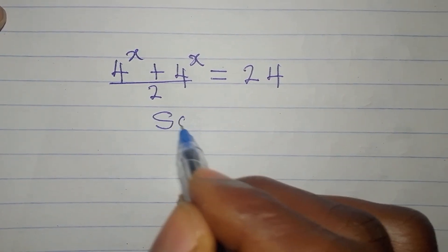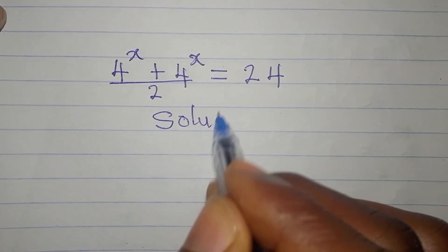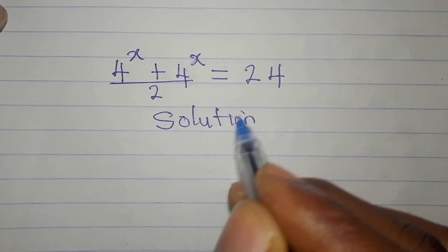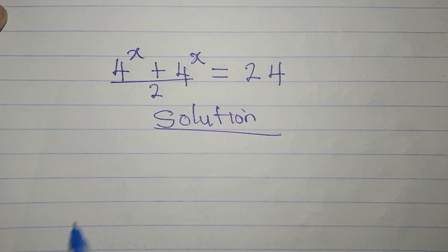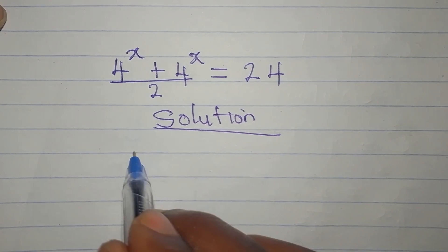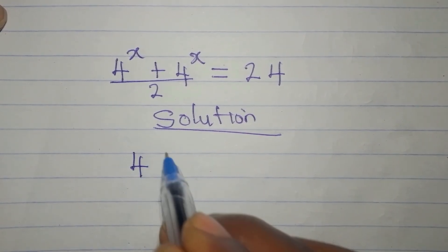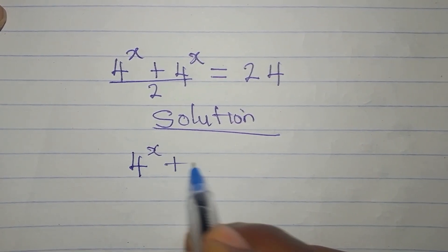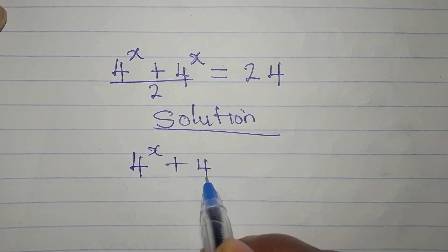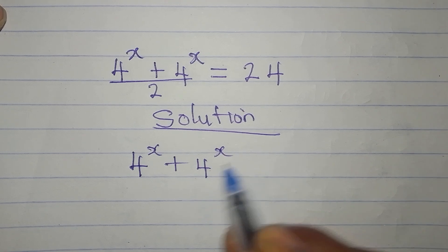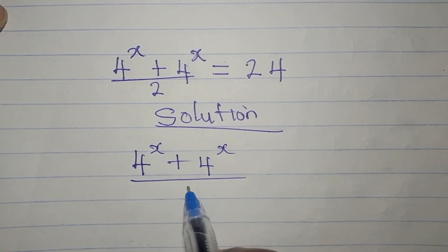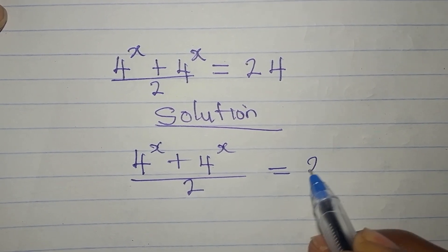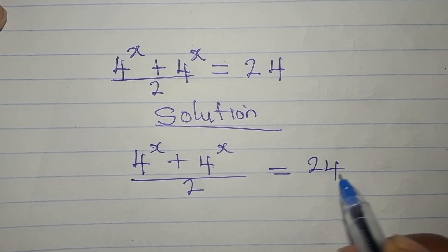Hi everyone. This is what we have to solve: 4 to the power of x plus 4 to the power of x, divided by 2, equals 24.